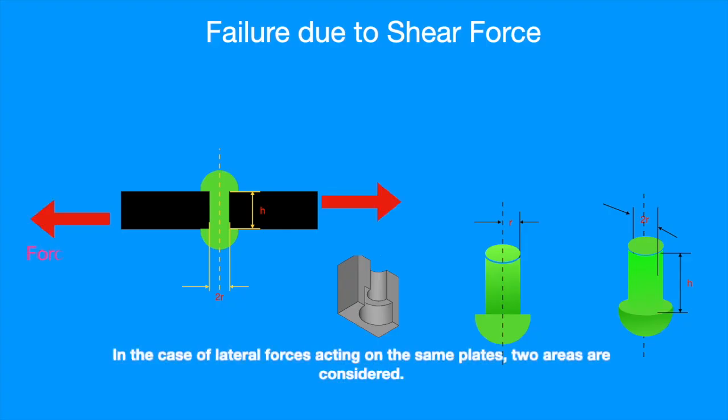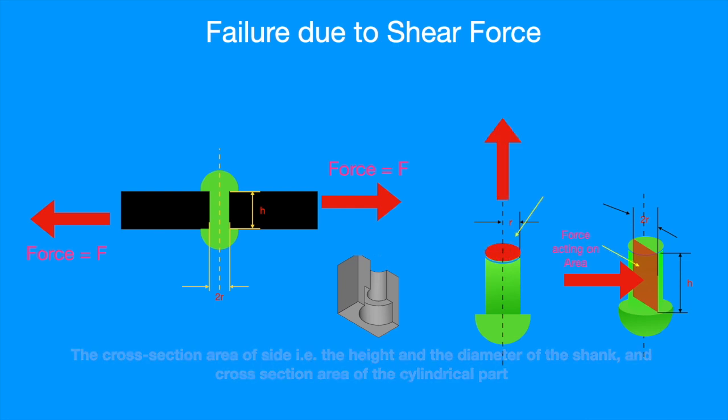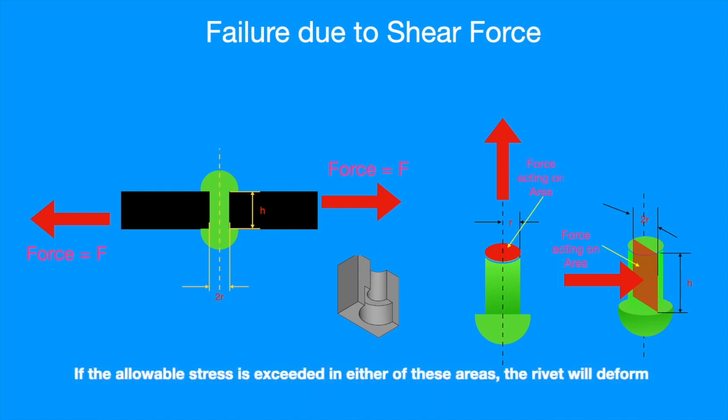In case of lateral forces acting on the same plates, two areas are considered. The cross-sectional area of the site with height and diameter of the shank and the cross-sectional area of the cylindrical part of the shank need to be considered. If the allowable stress is exceeded in either of these areas, the rivet will deform.